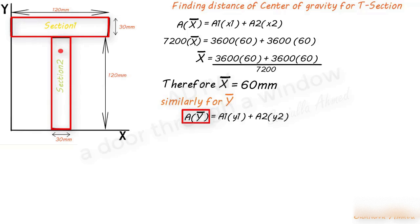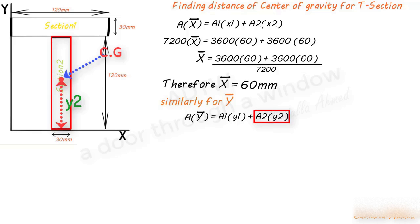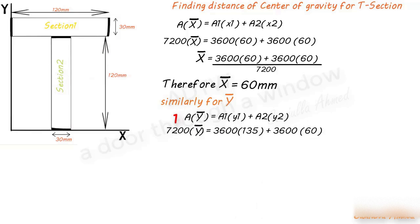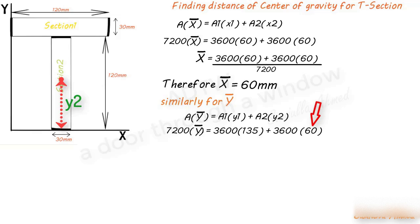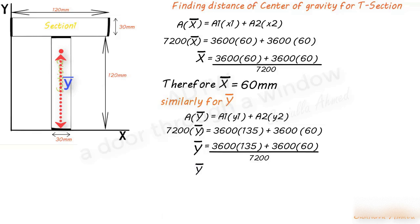Substituting values: 7200 × ȳ = 3600 × 135 + 3600 × 60. Here 135 mm is the distance of CG of Section 1 from the X-axis, and 60 mm is the distance of CG of Section 2 from the X-axis. After rearranging and solving, we get ȳ = 97.5 mm.